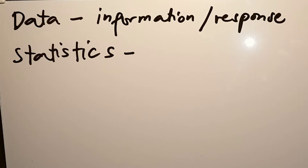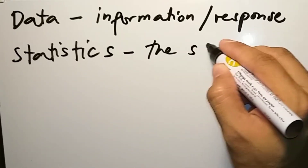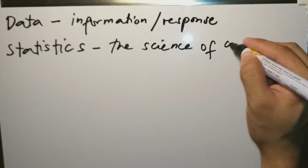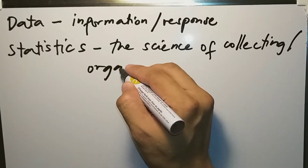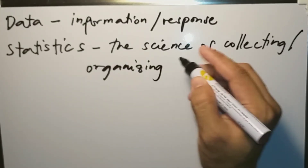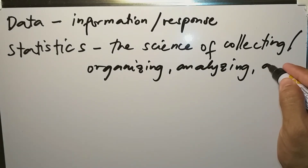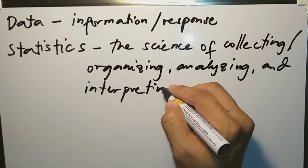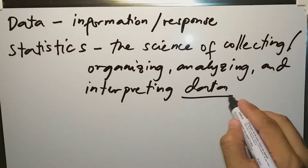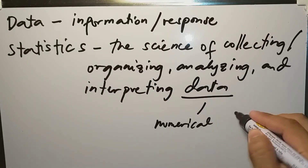Now let us define what statistics is. Statistics is the science of collecting, organizing, analyzing, and interpreting data in order to make decisions. So it is the science of collecting, organizing, analyzing, and interpreting data.